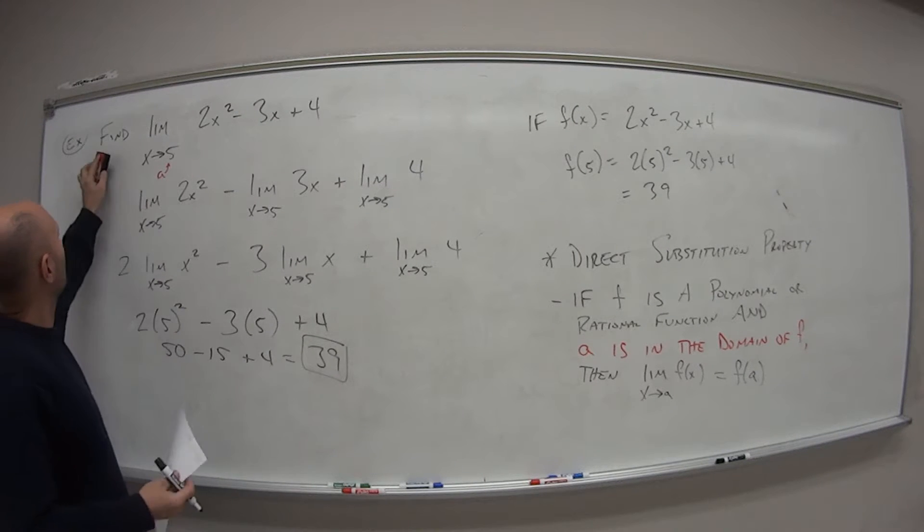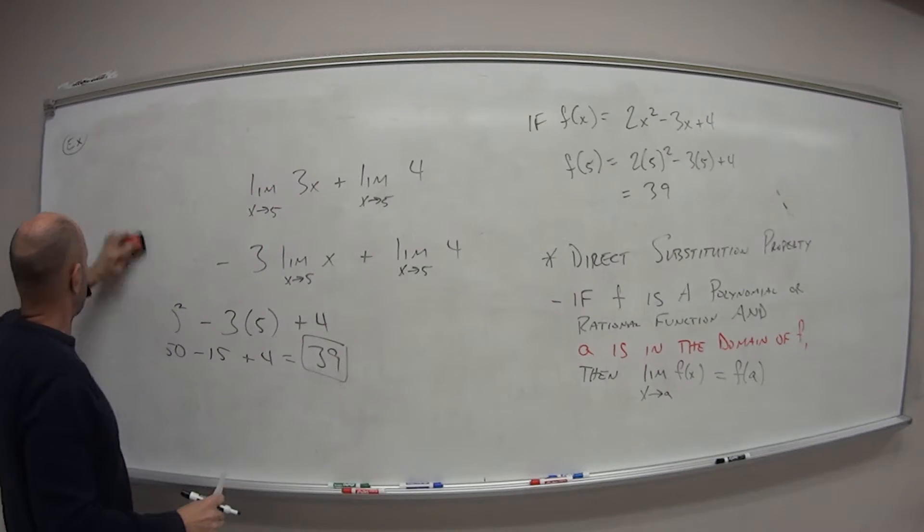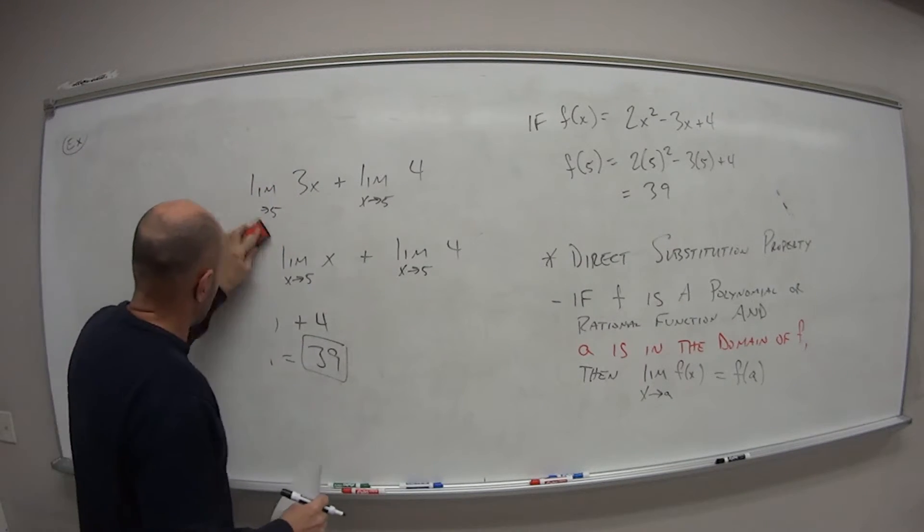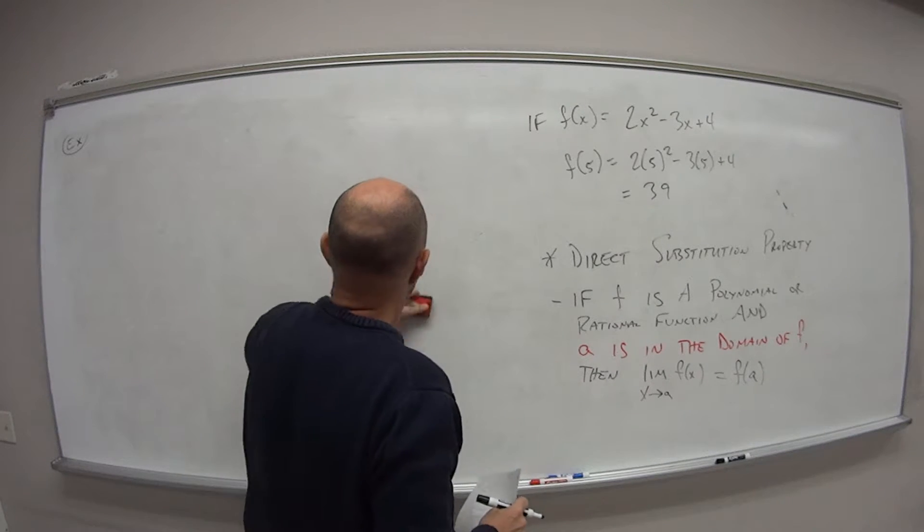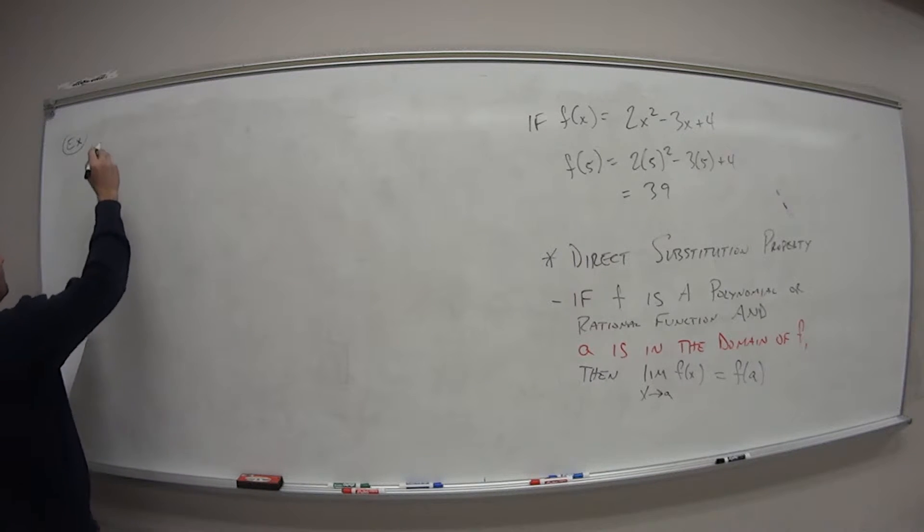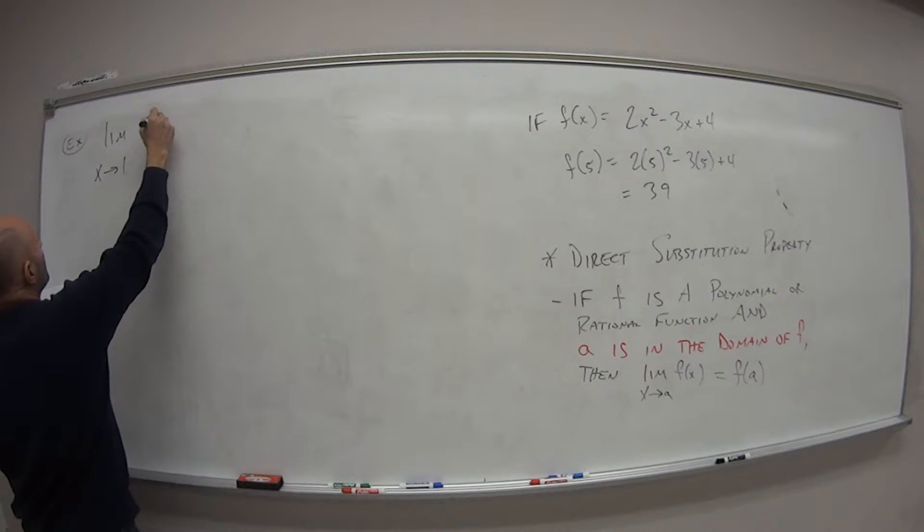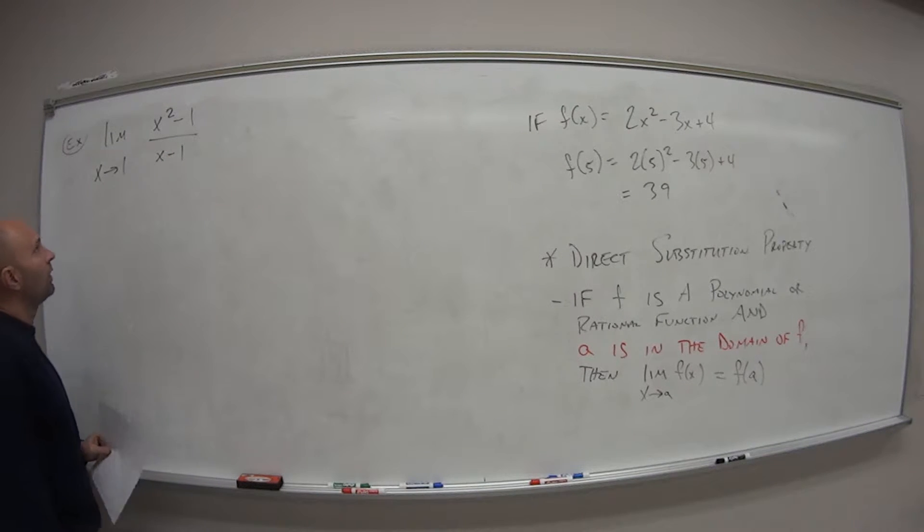So let's look at another example. We want to find the following. What's the limit as x approaches 1 of x squared minus 1 over x minus 1?